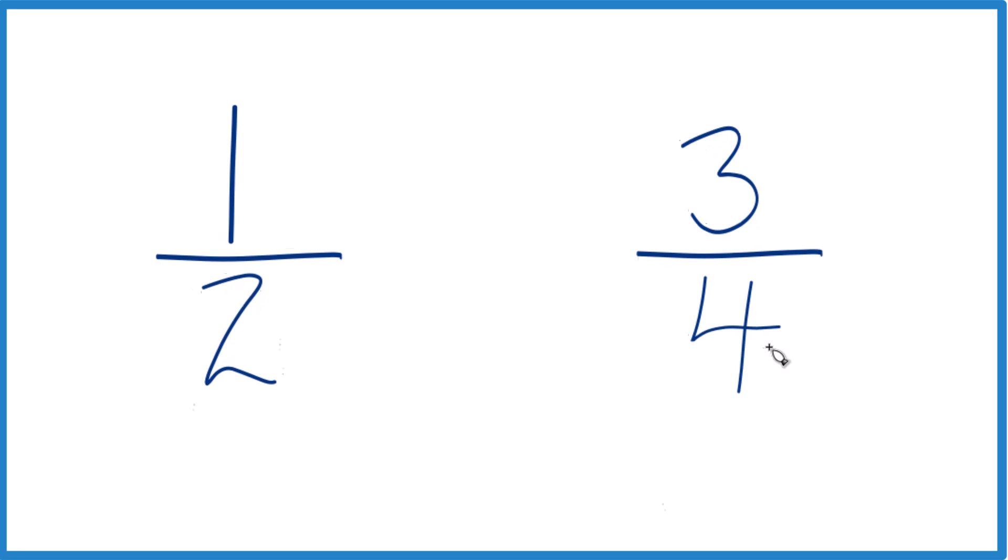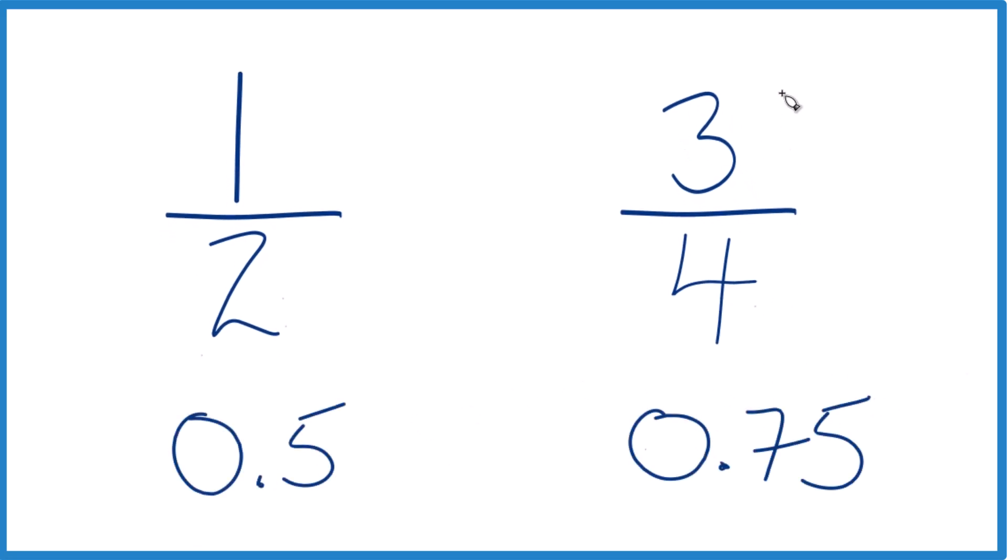0.5 and 0.75. You can see three-fourths of a cup is larger—it's 0.25 larger, which is one-fourth of a cup. So three-fourths of a cup is one-fourth of a cup larger than half a cup.